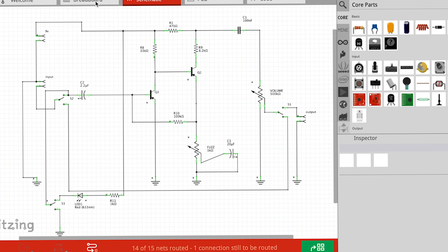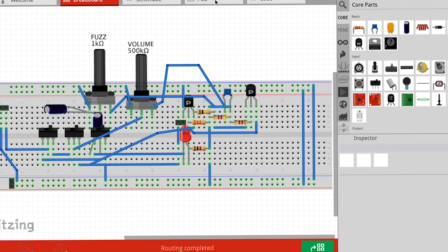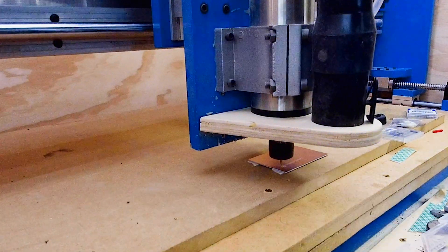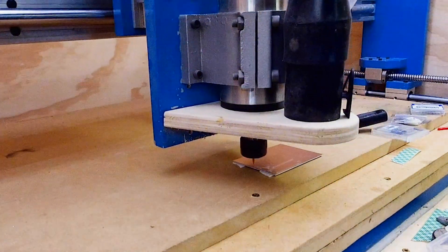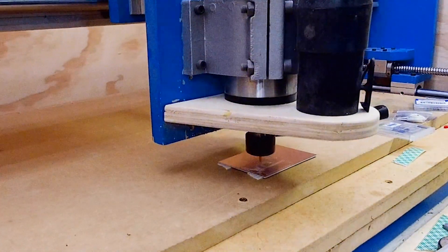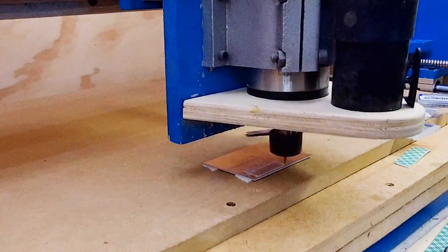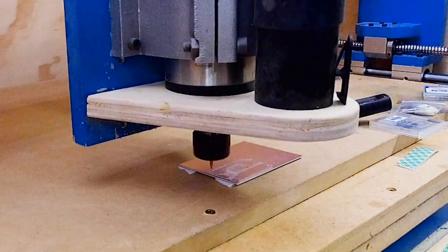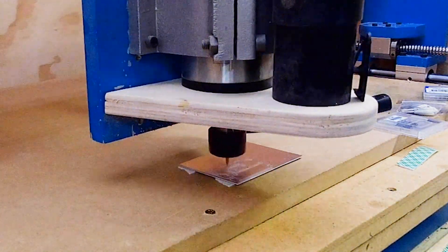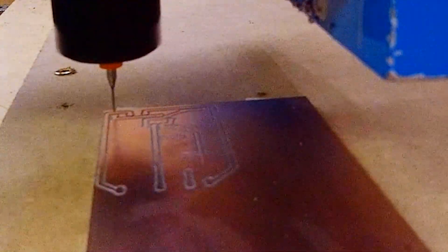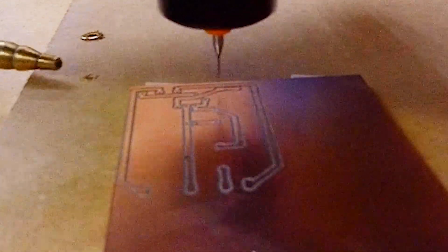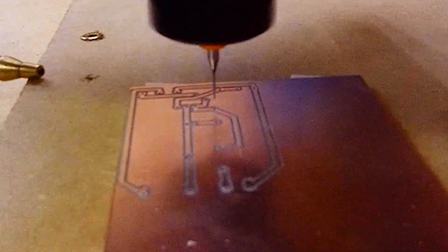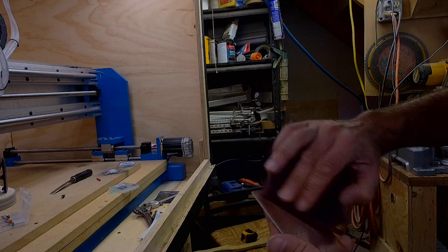And there's the breadboard layout and here is the first circuit board and now I'm cutting that out on the CNC machine. I'm just using a really light v-groove engraving bit and now I'm drilling out the holes. There it is.